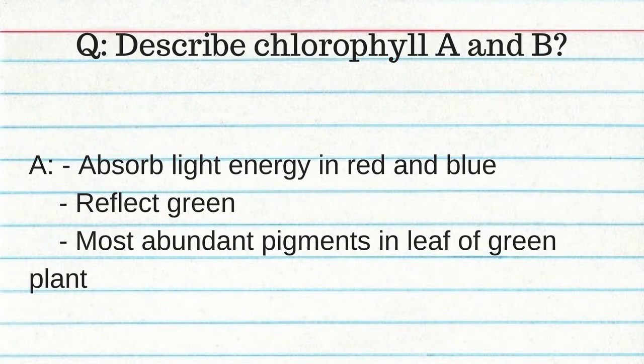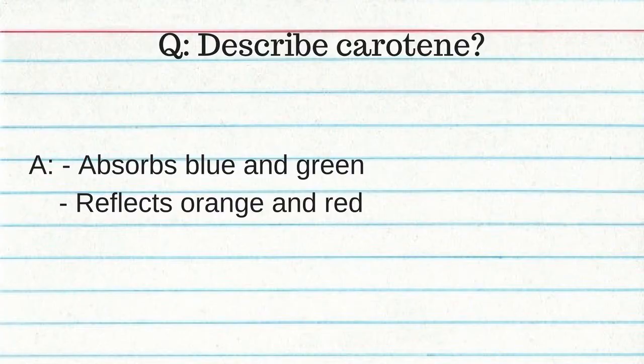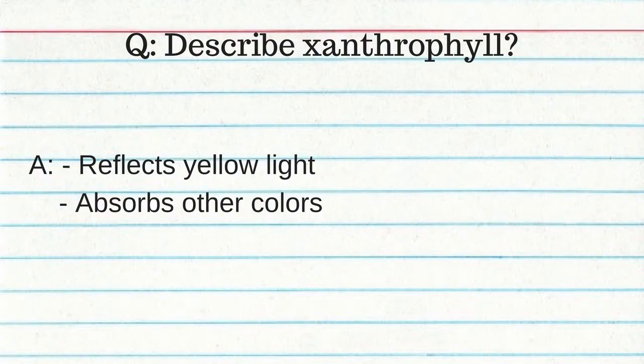What are pigments? Special molecules in plant cells that absorb different wavelengths of light. Chlorophyll A and B absorb light energy in red and blue, reflect green, and are the most abundant pigments in the leaf of a green plant. Carotene absorbs blue and green and reflects orange and red. Xanthophyll reflects yellow light and absorbs all other colors. Factors that affect photosynthesis: amount of water available, temperature, and intensity of sunlight.